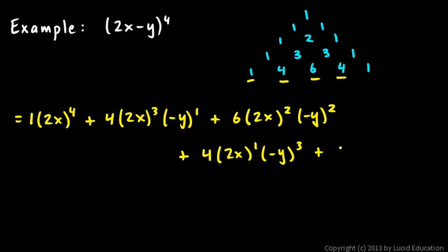And then plus 1 times 2x to the power of 0. And again, you don't have to write that, because anything to the power of 0 is just 1. So 2x to the power of 0, and then we have negative y to the power of 4.